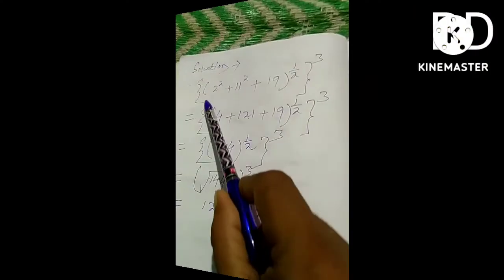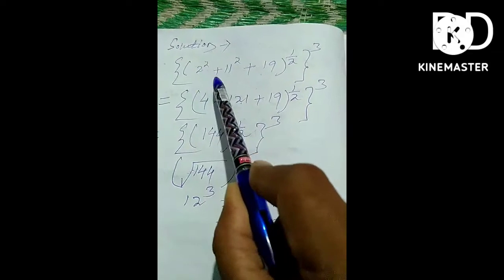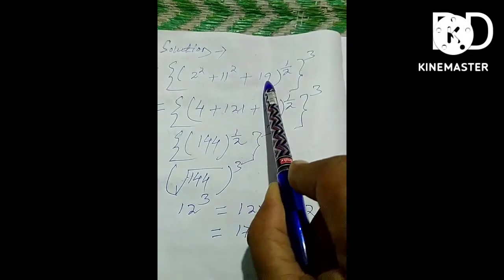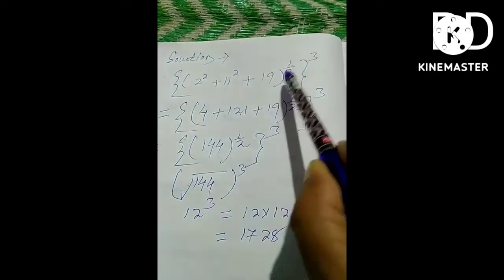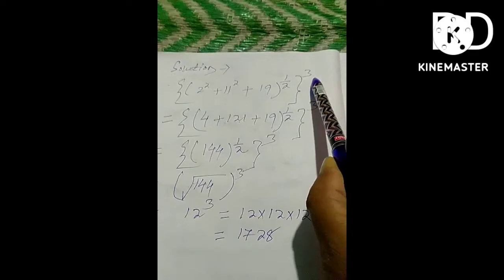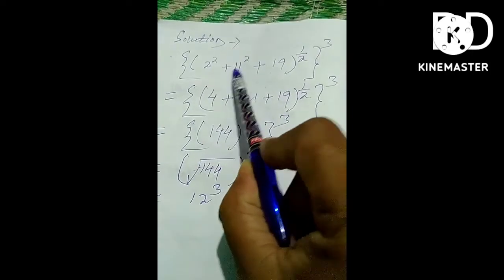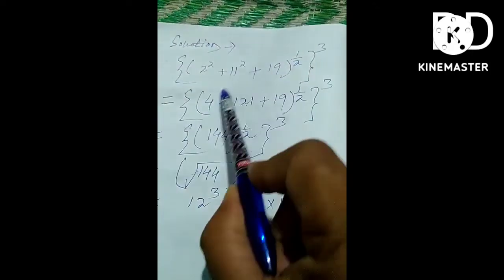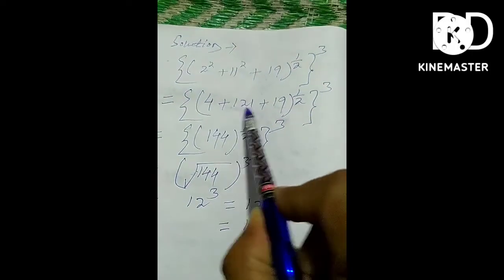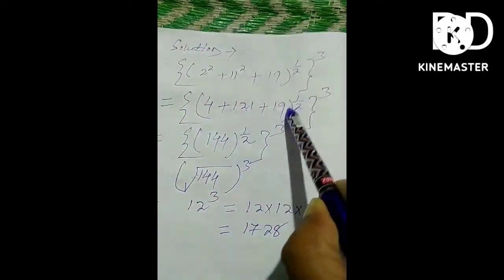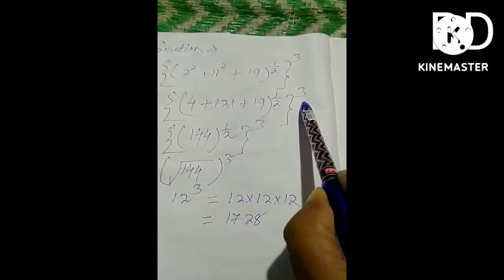In this way we can solve. The solution will be 2 power 2 plus 11 power 2 plus 19, whole power 1 by 2, whole power 3. So, 2 power 2 means 2 multiplied by 2 equals 4, plus 11 power 2 means 11 multiplied by 11 equals 121, plus 19, whole power 1 by 2, whole power 3.